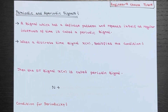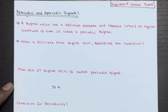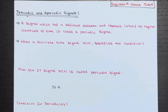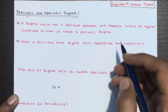Get ready for an exciting lecture on periodic and aperiodic signals. A periodic signal is a signal that has a definite pattern and repeats itself at regular intervals of time. Imagine a wave that just keeps going and going, following a specific pattern — that is a periodic signal.